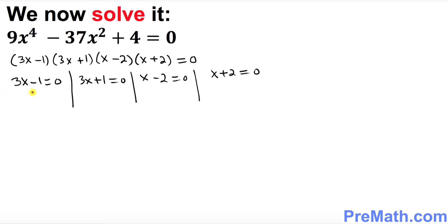Since we want to solve for x, I want you to simply add 1 over here. So what happens is this cancels out. So 3x equals to 1, so x turns out to be 1 third. So that is one of the solutions.